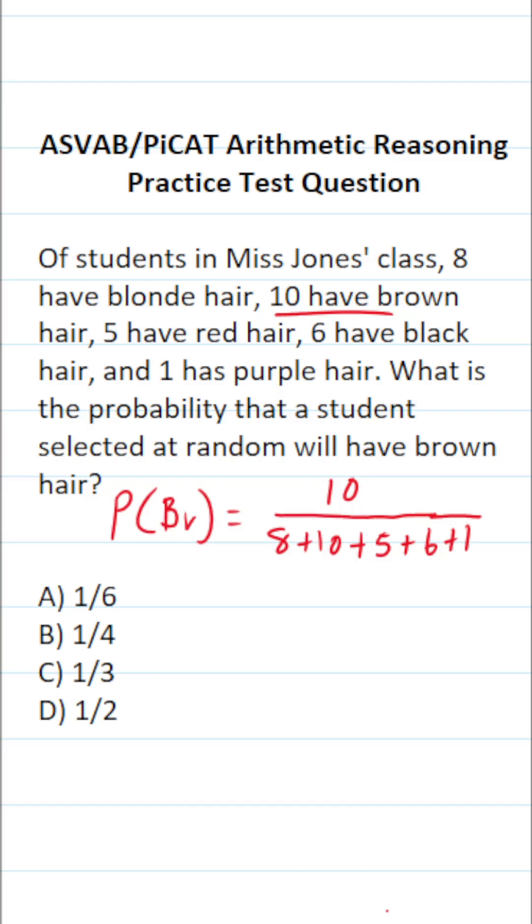And by doing this simple arithmetic here, we'll have our answer. This is 10 divided by 8 and 10 is going to be 18, 5 and 6 is 11, and then we have 1. 18 plus 11 is 29, plus 1 is 30.